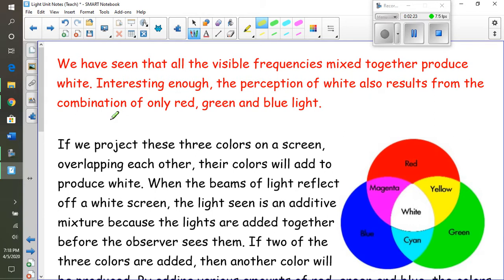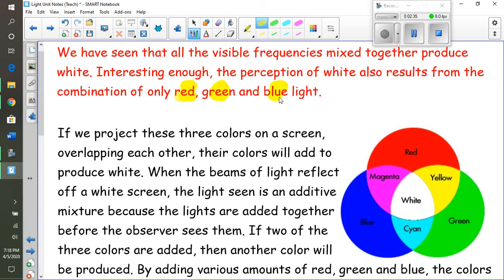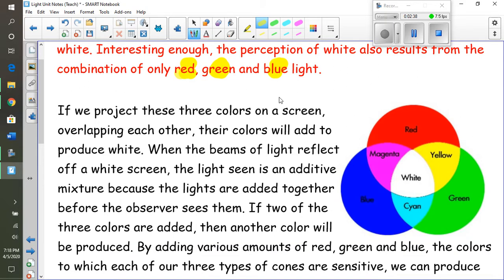Interestingly enough though, the perception of white is also the result from a combination of only red, green, and blue. And you may remember that those are three cone sensors in your eyes. So if we project these three colors on a screen overlapping with each other, this is kind of what we see here. Red and blue when mixed together make magenta. Magenta is not actually a frequency, so it's a combination. Red and green make yellow, blue and green make cyan, and then red, blue, and green mixed together make white.